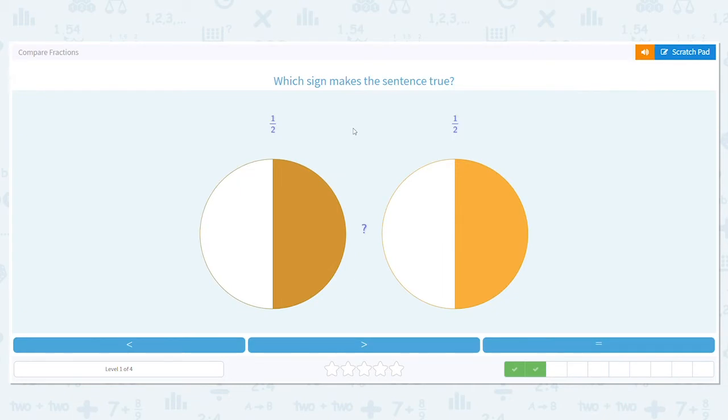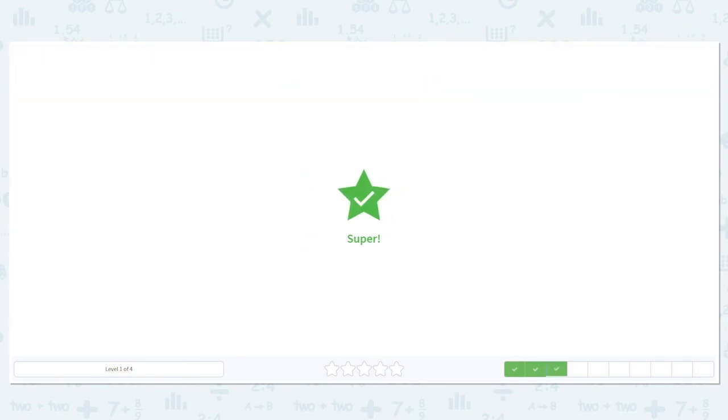One-half and one-half. If I overlap those pictures, would the shaded in parts match up exactly? Well, my numerators match, my denominators match. So what sign goes in there? Less than, greater than, or equal to? Equal to. Good job. They're the same.